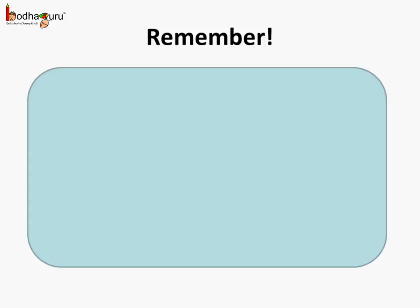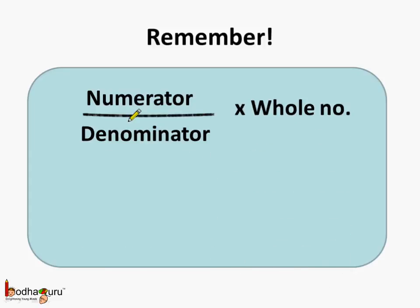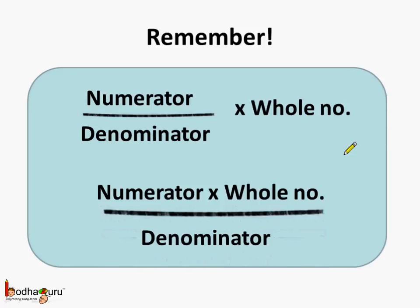So remember: when we have a fraction multiplied by a whole number, then we have numerator divided by denominator multiplied by the whole number, which is equal to the numerator multiplied by the whole number and then divided by the denominator. This was multiplication of a fraction by a whole number.